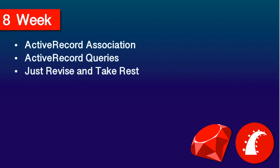After practicing associations, give the next three days to get better with Active Record queries. If you know how to write Active Record queries, you can perform CRUD operations in a more optimized way. This is something you will deal with throughout your entire Rails developer career, so give at least three days to learn Active Record queries. On the last day of the eighth week, dedicate two to three hours to revise the steps covered so far, then take rest for the remainder of the day because another important concept is on the way.